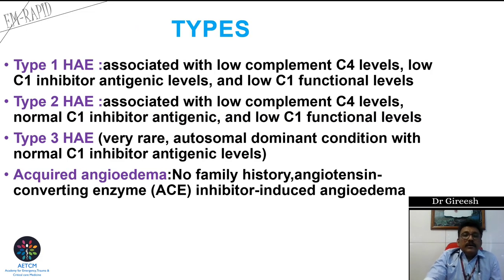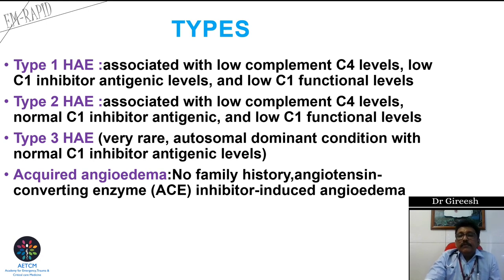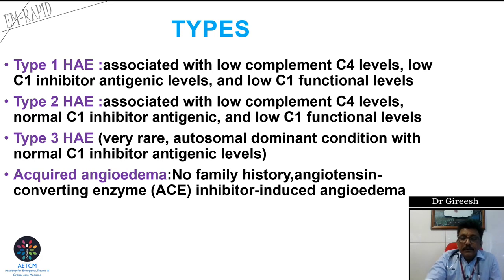There are different types of hereditary angioedema. Type 1 is associated with low complement C4, low C1 inhibitor antigenic levels, and low C1 functional levels. Type 2 has low C4, normal C1 inhibitor antigenic levels, but low C1 functional levels. Type 3 is a very rare autosomal dominant condition with normal C1 inhibitor antigenic levels. Acquired angioedema is mainly seen with ACE inhibitor use.